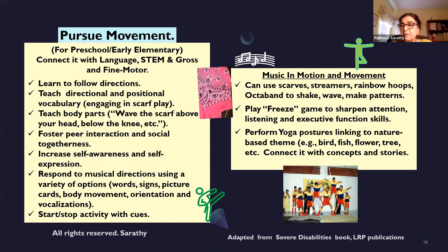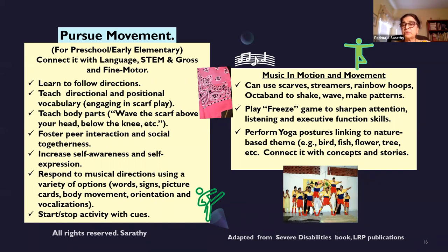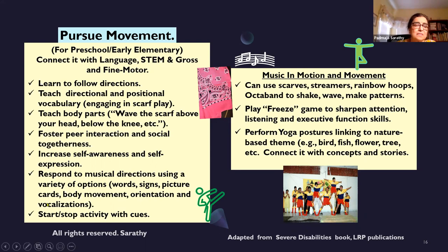Another suggestion is to try yoga postures: bird, fish, flower, and tree. Connect it to stories — for example, in 'The Giving Tree,' there was a big tree, so students make that tree pose. When students connect a posture to a story, they have to think about the story and make that association. These are all brain-building activities.